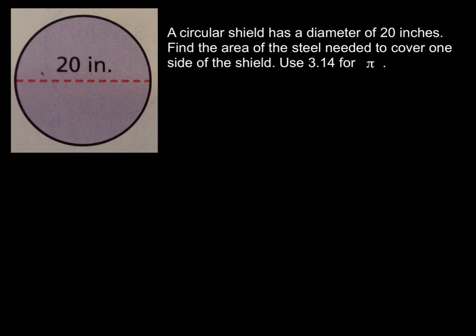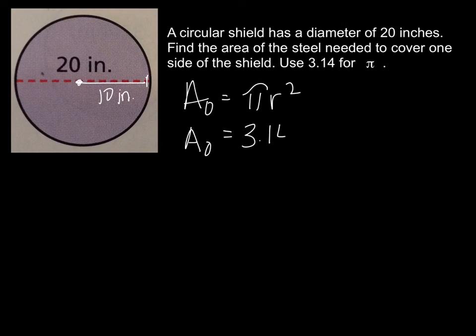And we have one more problem to try out. So here we have a circular shield just kind of like the story at the beginning. It has a diameter of 20 inches so that means we know that the radius is 10 inches because I just divided my diameter by 2. We need to find the area of the steel needed to cover one side of the shield. Use 3.14 for pi. So now we're going to try using a decimal instead of our 22 sevenths as a fraction. We'll start by writing the formula. The area of a circle equals pi r squared.